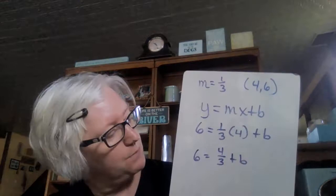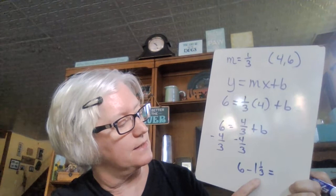4/3 is the same thing as 1 and 1/3. But at this point, if you want to use a calculator, that's fine. I'm going to subtract 4/3 from both sides. So, really, I'm doing 6 minus 1 and 1/3. If you want to do that on a calculator, you can. But 6 minus 1 is 5. So, this is going to be 4 and 2/3 is going to be my answer. So, my y-intercept is 4 and 2/3. So, my equation then is y equals 1/3x plus 4 and 2/3.